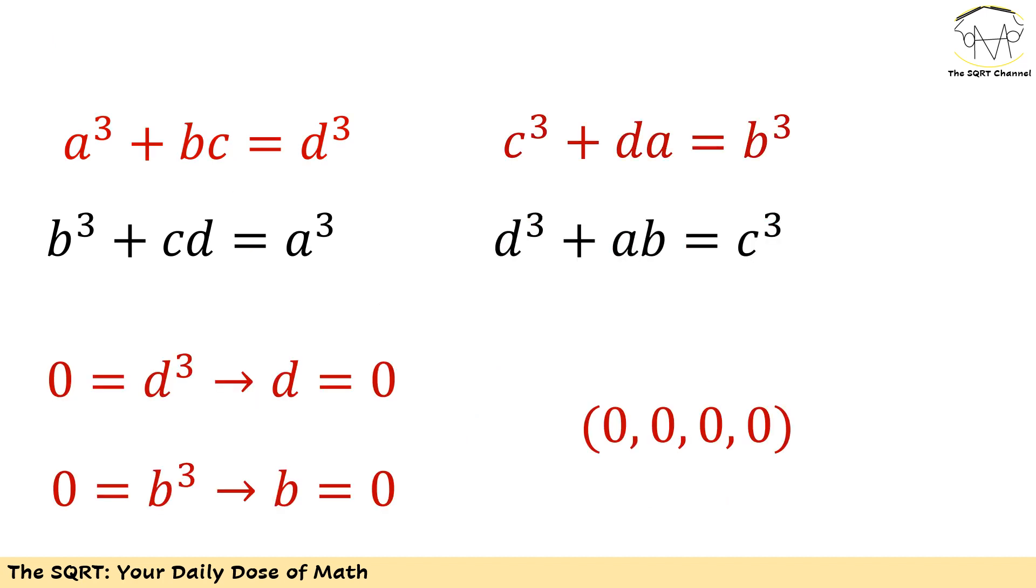Now I'm going to focus on the first and the second equations. Remember we found that a is going to be zero. So a is zero, c is zero, so bc is going to go out as well, and then I will have d³ = 0, so d needs to be zero.